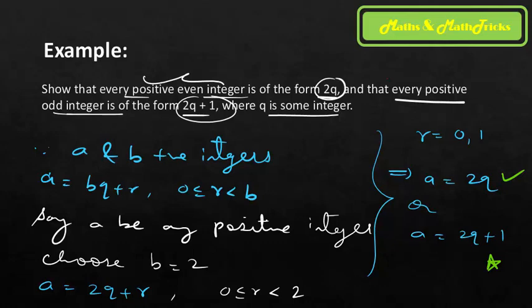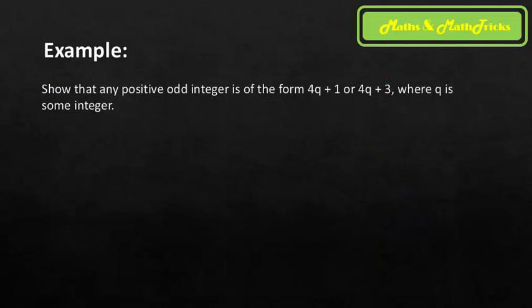Since 2q is a multiple of 2, it is even. And 2q + 1 is even plus 1, which is odd. Therefore every positive integer is either of the form 2q (even) or 2q + 1 (odd) — which is what we needed to show.